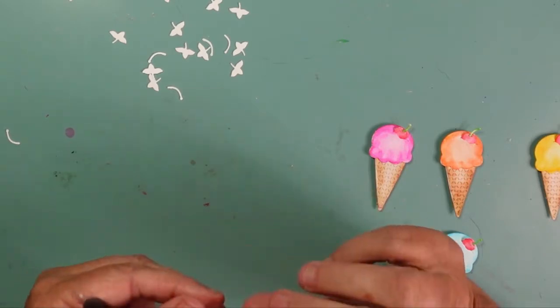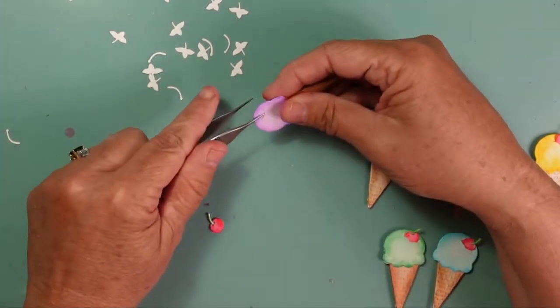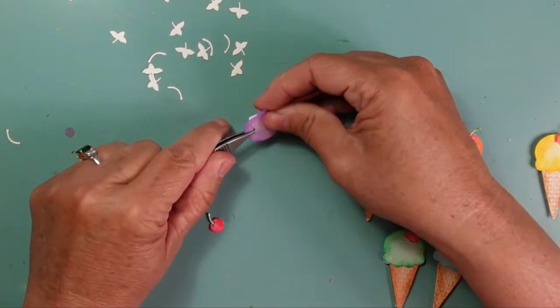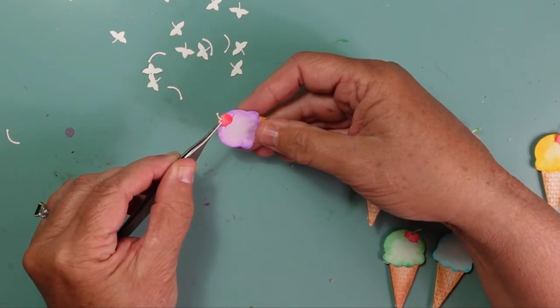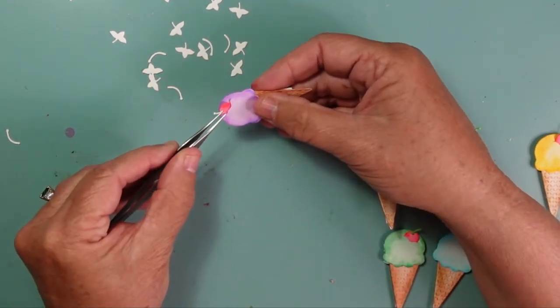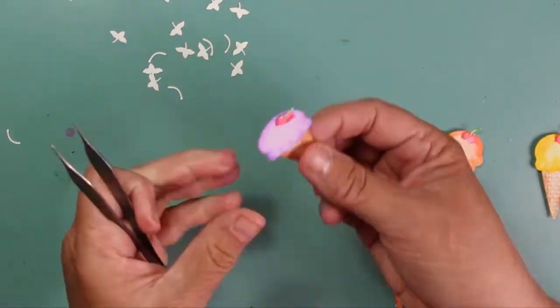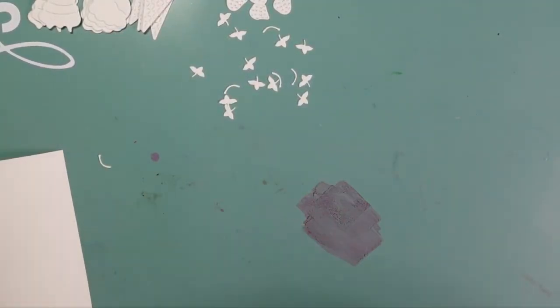I use my reverse tweezers because that Cottage Cuts die does cut a slit in the top of the cherry. I insert my stem and then the ice cream scoop also has that little slit. So I have added some foam tape to the back of my ice cream, but I made sure not to press it down too tight so that I could slip those little cherries inside my cones.